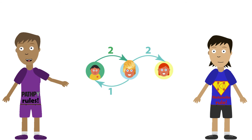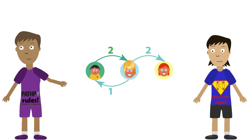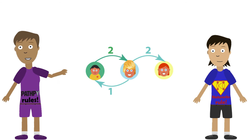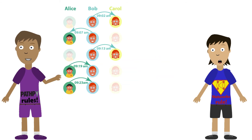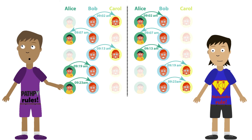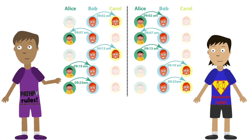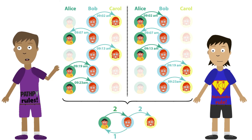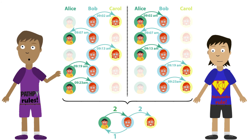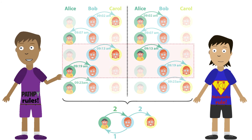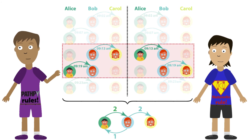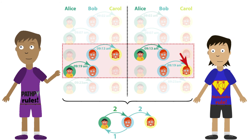Not so fast. You just discarded the timing and ordering of interactions. Consider these two interaction sequences between Alice, Bob, and Carol. For you, both are the same social network, but due to the order of interactions, in the left example, no path in time connects Alice via Bob to Carol.